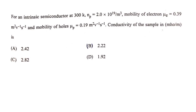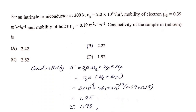For an intrinsic semiconductor at 300 K, Np = 2×10¹⁹ per m³, mobility of electrons μe = 0.39 m²/V·s, and mobility of holes μp = 0.19 m²/V·s. The conductivity is σ = ne·e·μe + Np·e·μp. For an intrinsic semiconductor, ne = Np, so σ = ne·e·(μe + μp).